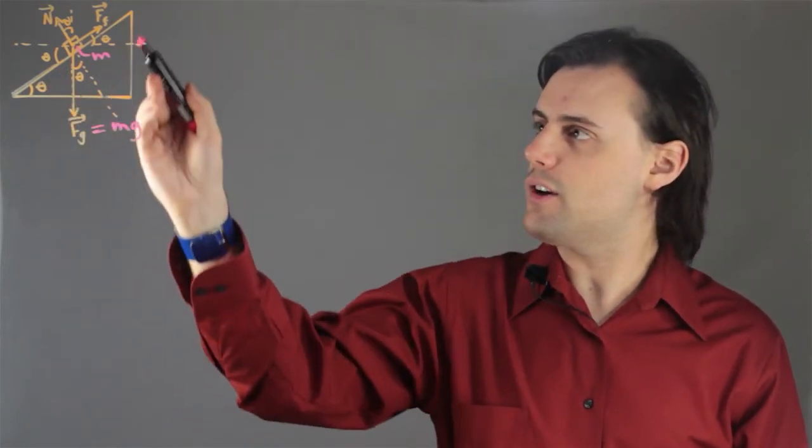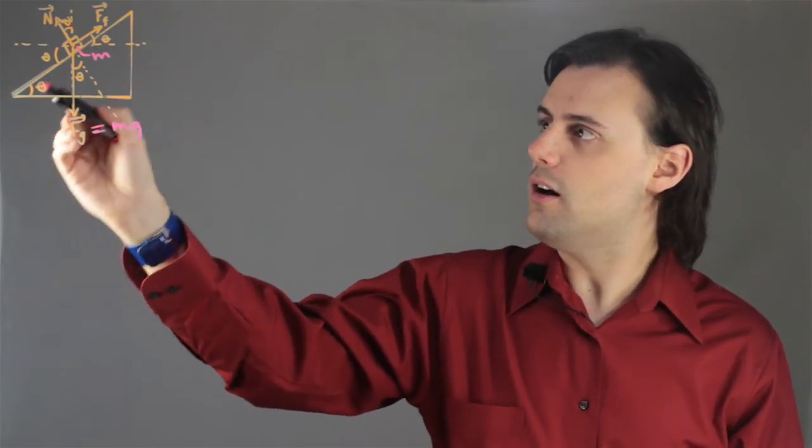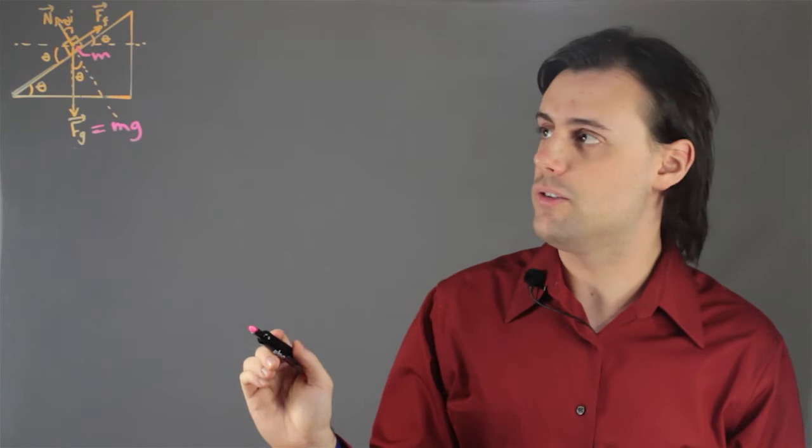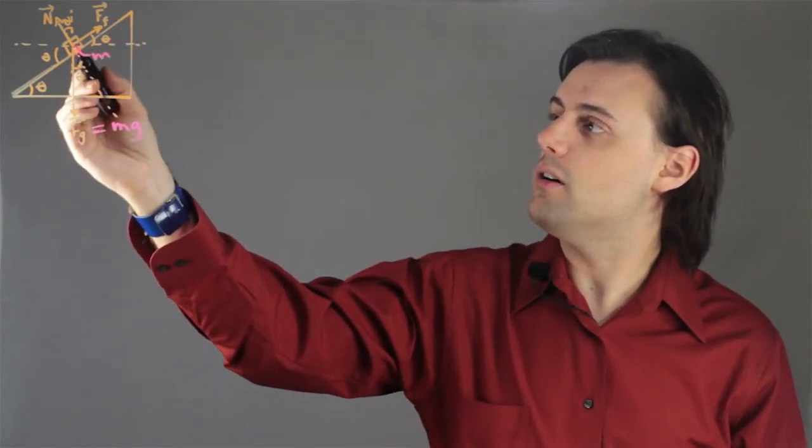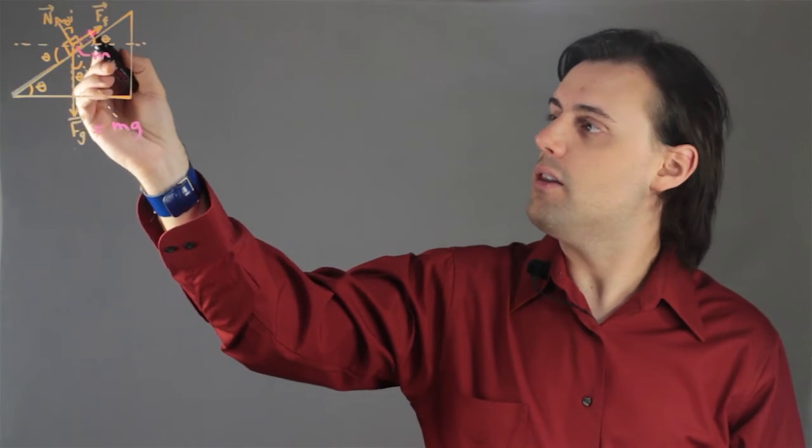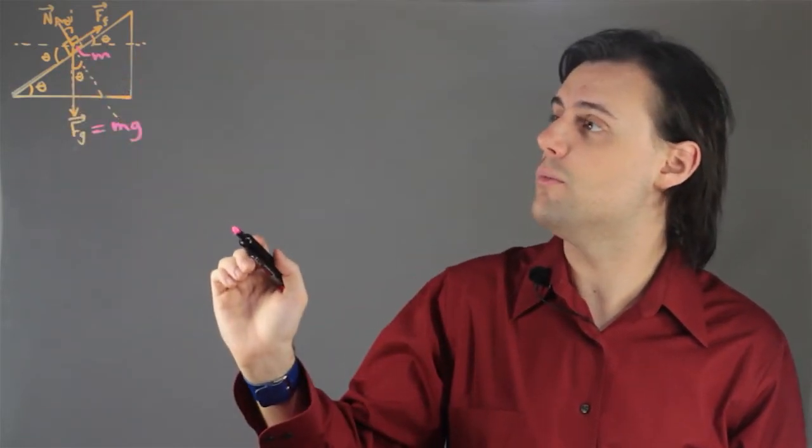And finally, I have a friction force because there is assumed to be some friction on top of this ramp, on top of this plane. And that's going to act in the motion opposite to where the mass will flow, where the mass will move.